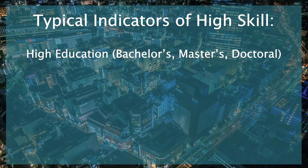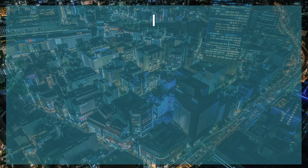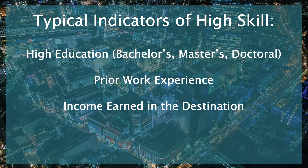When it comes to individual countries and their definition of who they consider a highly skilled migrant — who they're going to give a visa or residence permit to — they often use one or a combination of indicators. These could include education, especially post-secondary degrees like bachelor's, master's, or doctoral degrees; prior work experience or specific job type or sector; and some countries look at income earned in the destination above a specific threshold, which is highly correlated with education, work experience, and labor market shortages.